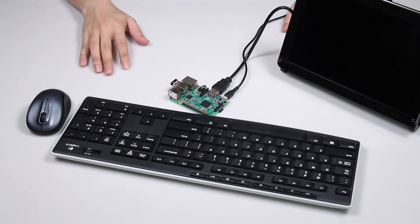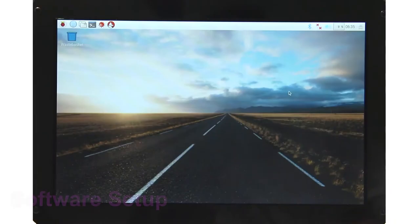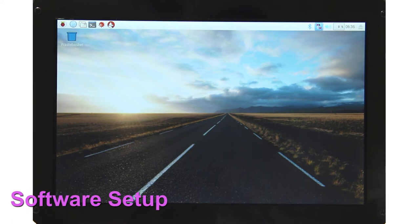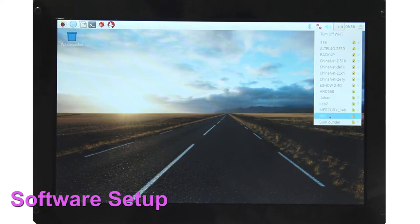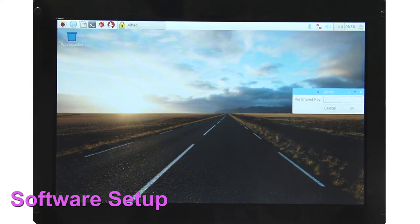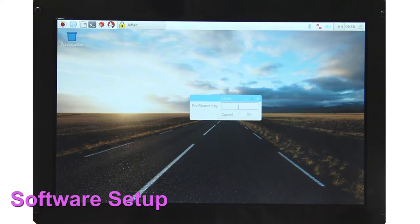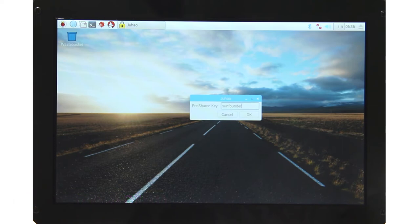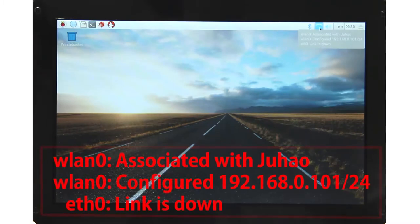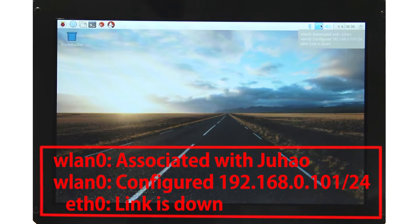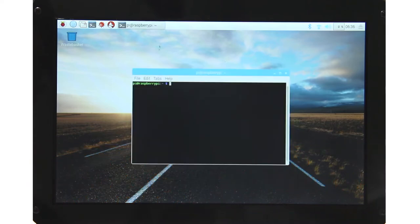We are going to set up the software first. After the Pi is booted up, choose the top right corner icon with a red cross on it and find your Wi-Fi SSID. Type in the password. After it's connected, you can point to this icon and see the IP address of your Raspberry Pi. You should note it down. My IP address is 192.168.1.101. Then open the terminal icon.